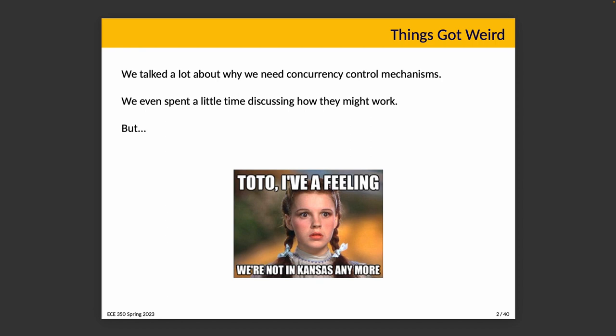We went over a number of solutions that did not work — things like strict alternation, using flags to indicate whose turn is next. When we said they didn't work, they all failed for various reasons, usually because the resulting scheme did not actually provide mutual exclusion. So it was possible for two threads to end up in the critical section, or it was vulnerable to deadlock or starvation — and that 'or' is inclusive, so either one would be bad.